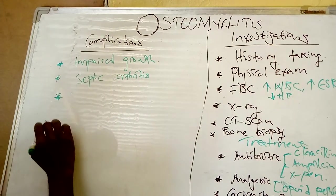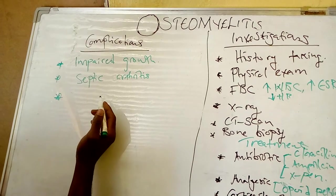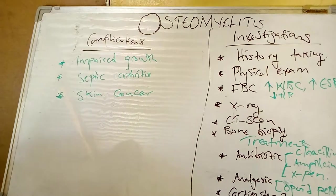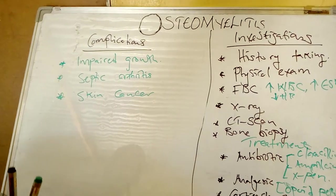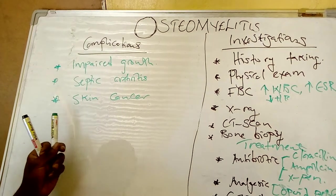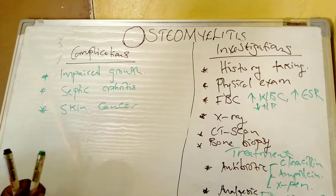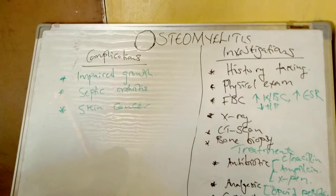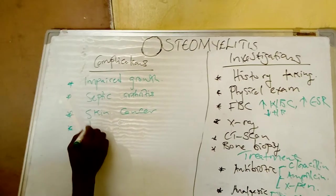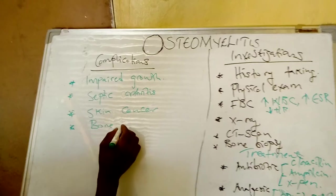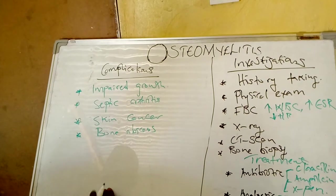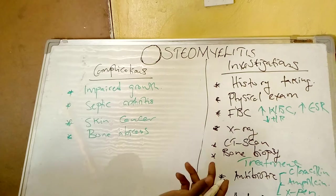Another complication is skin cancer. The pus coming out from the skin can cause skin cancer. The patient can also develop a bone abscess, such as a subperiosteal abscess.